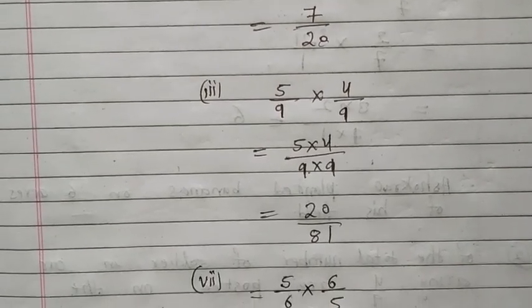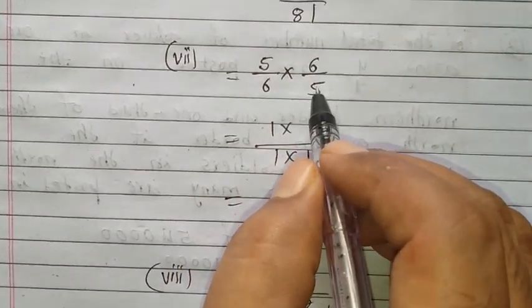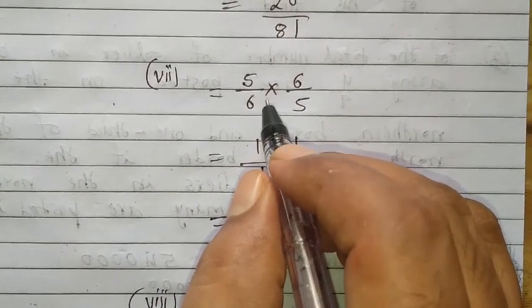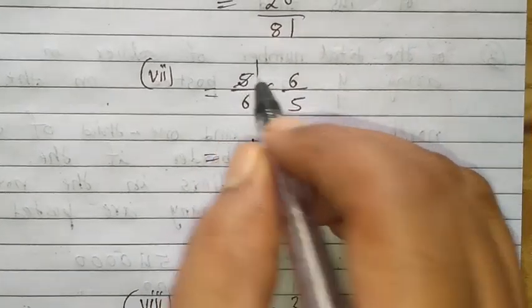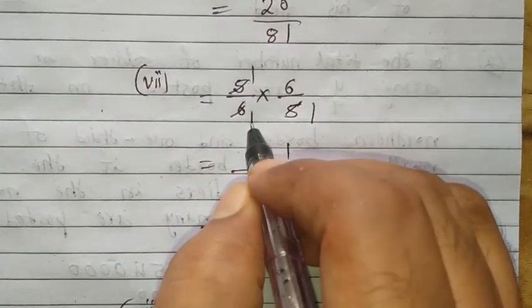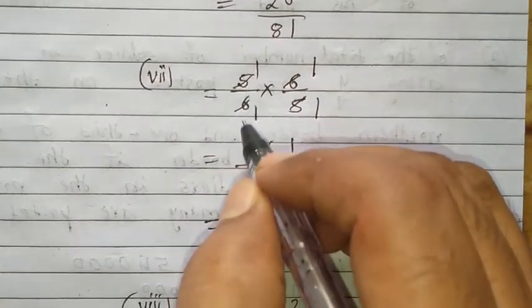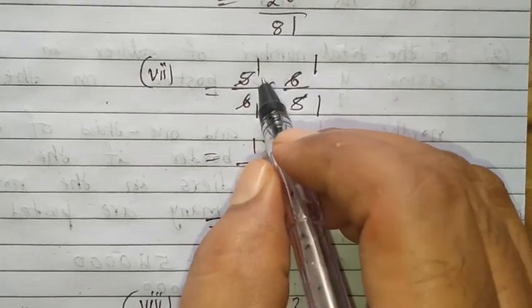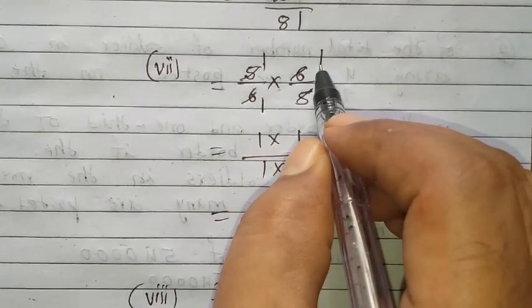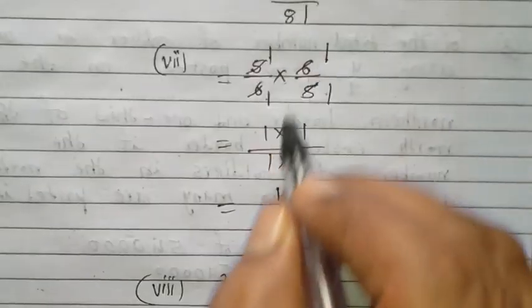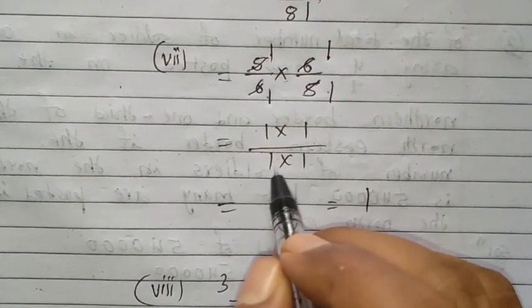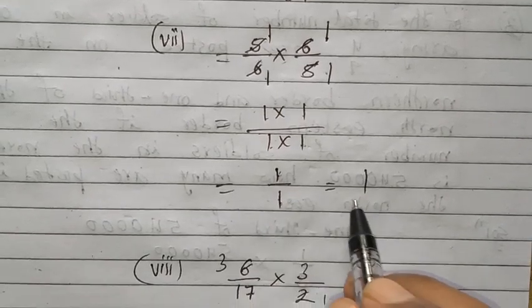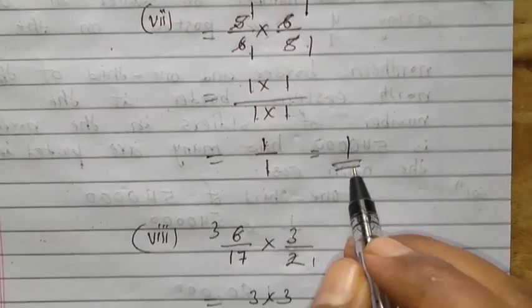Now see the seventh question: 5 upon 6 into 6 upon 5. If the fractions can be simplified, try to simplify first. We are able to cancel out up and down as well as crosswise. Cancel the 5s and cancel the 6s — what is left? 1 into 1 upon 1 into 1. So 1 upon 1 equals 1.